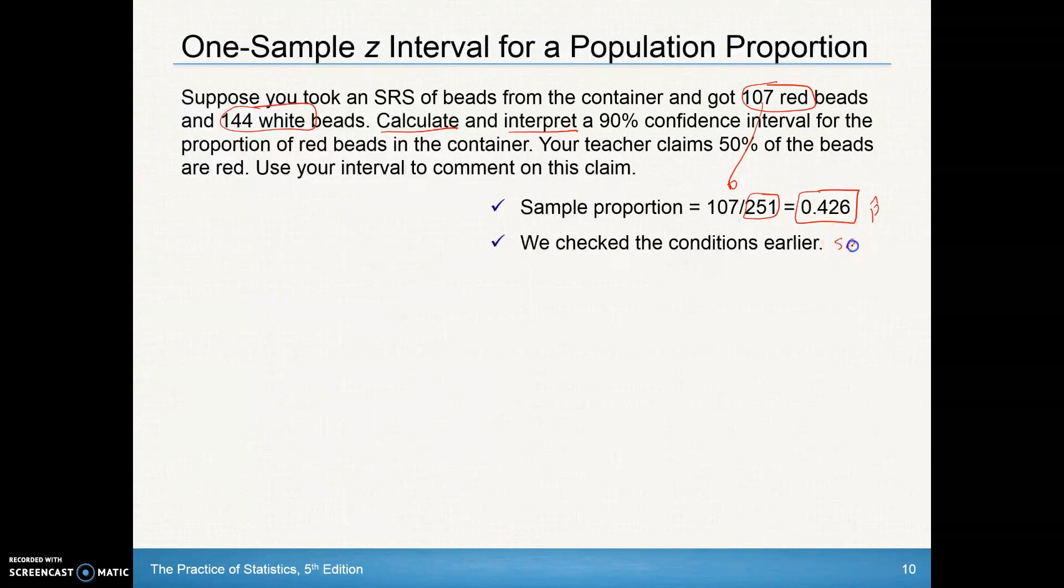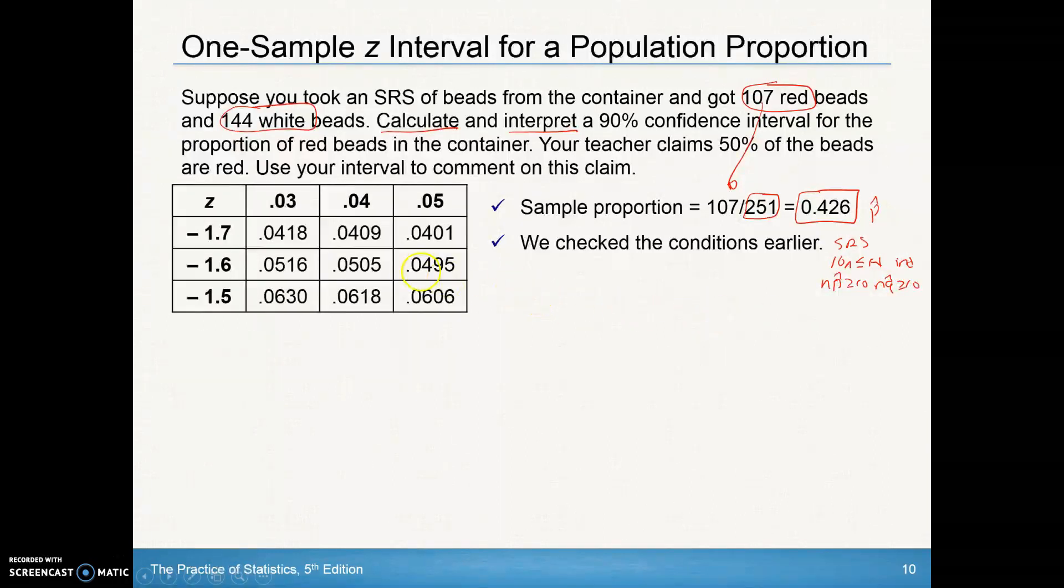We did check those conditions earlier that it was from an SRS, that we do have 10 times our sample size is less than or equal to our population which establishes independence and that we can use our standard deviation, and we also establish that the n times p hat is greater than or equal to 10 and our n times q hat are greater than 10 too. So we can look up a Z score for our 90% confidence interval. For a 90%, we have a confidence interval where 90% is in the middle, which means I've got 10% on each end. So I'm looking at 5% on both ends. I'd have 0.05 here and 0.05 here to give me that 90% in the middle.